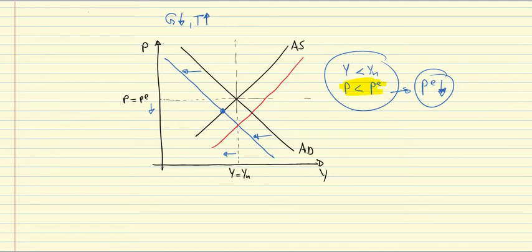The AS curve shifts downwards until it reaches an intersection at this point. So AS shifts down after AD shifts left with PE falling.